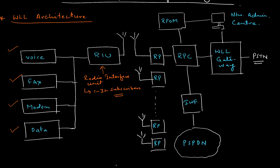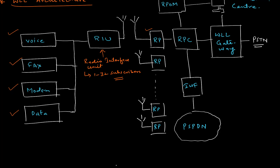After that, we have another unit called RP, which stands for Radio Port. This Radio Port supports 80 channels simultaneously. The radio port has one antenna, and this antenna is an omnidirectional antenna.